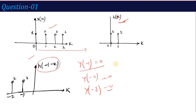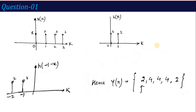Now writing these values as a sequence: Y(0) equals 2, Y(1) equals 4, Y(2) equals 4, Y(3) equals 4, Y(4) equals 2. This is the final answer written as the sequence {2, 4, 4, 4, 2}. This is our convolution sum — the output sequence of the convolution in discrete domain.